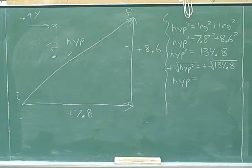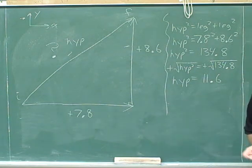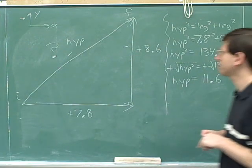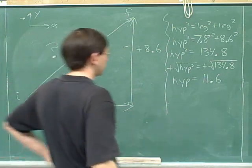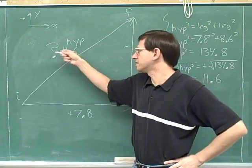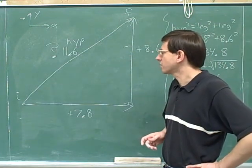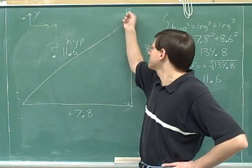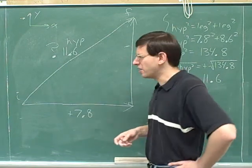We need our calculator again to find the square root of 134.8 — that's approximately 11.6. We're not going to be worrying about significant figures here. So the length of our hypotenuse is 11.6; this is the overall vector, so there's no need to determine a sign — overall vectors don't have signs. We've figured out that our final position is 11.6 meters from where we started. We found the magnitude of the overall displacement.